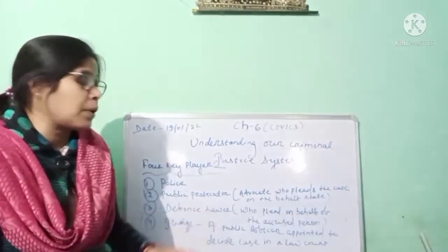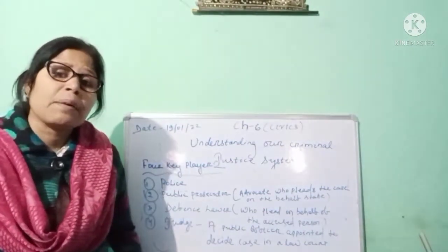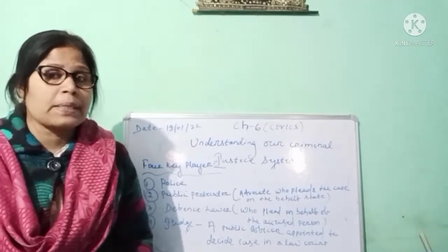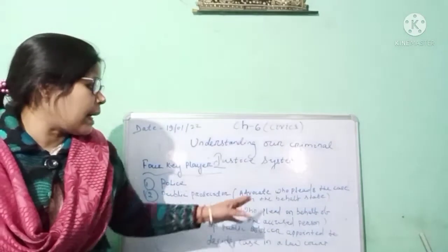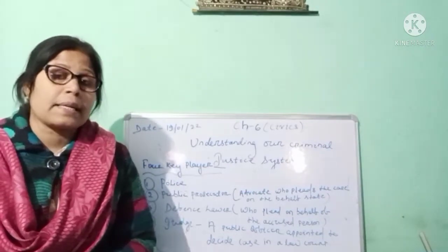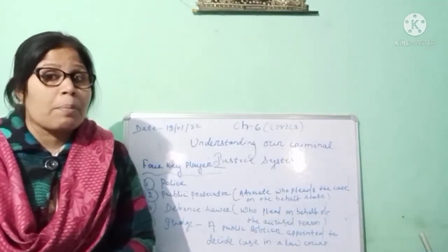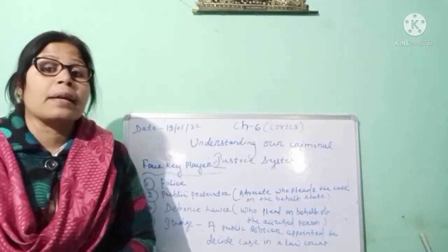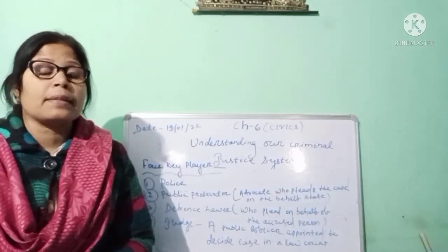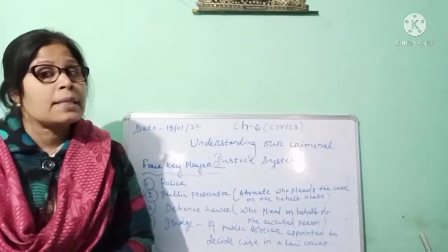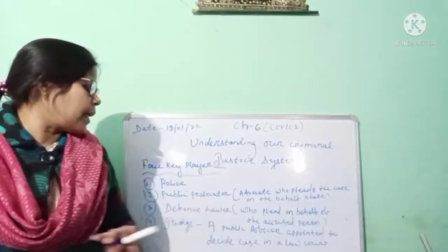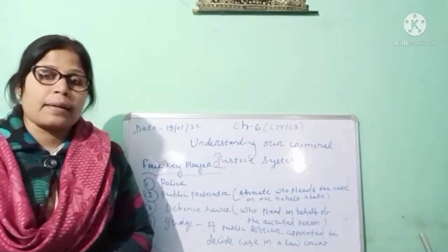The other key player is the public prosecutor. The public prosecutor is also an advocate — a public officer. That advocate pleads the case on behalf of the state. The lawyer who pleads on behalf of the state is known as the public prosecutor.